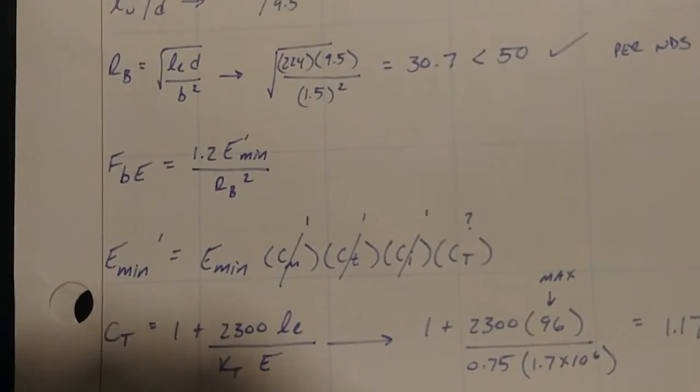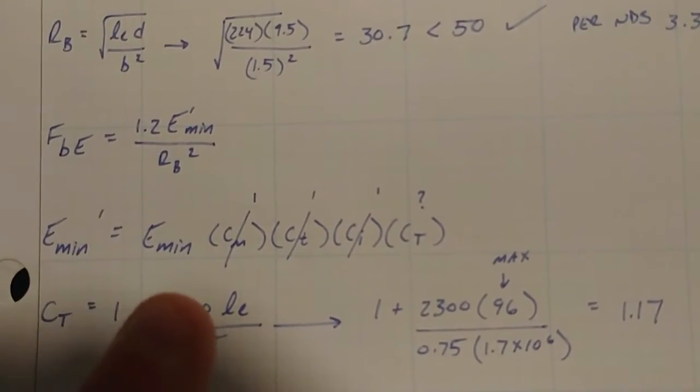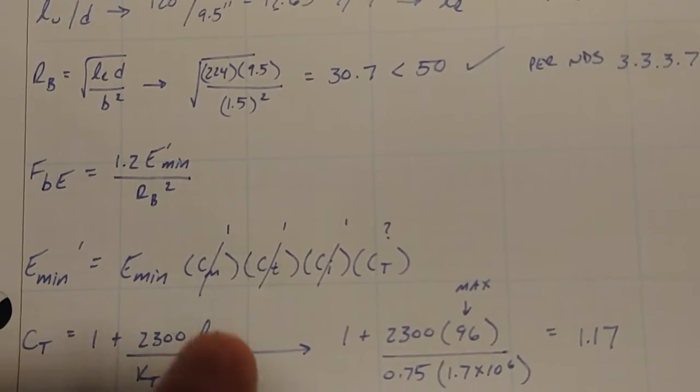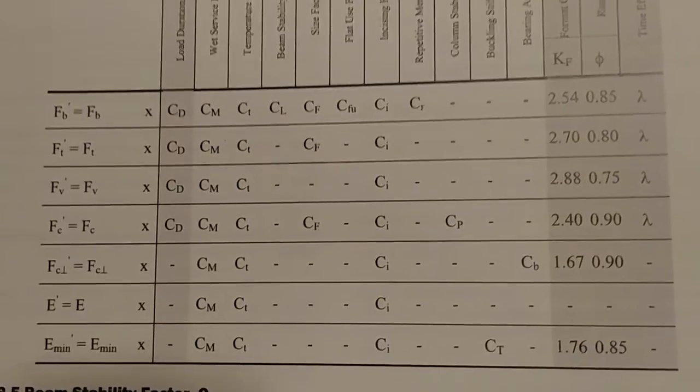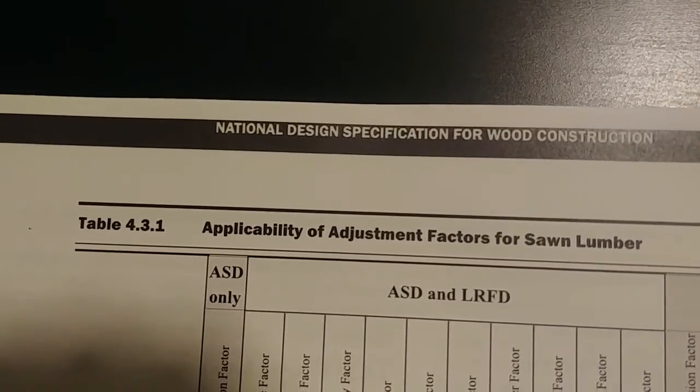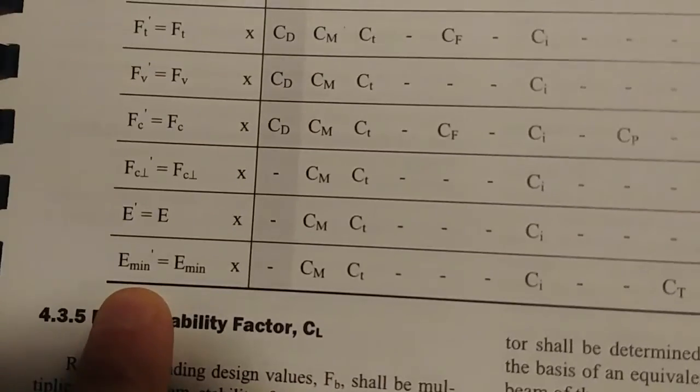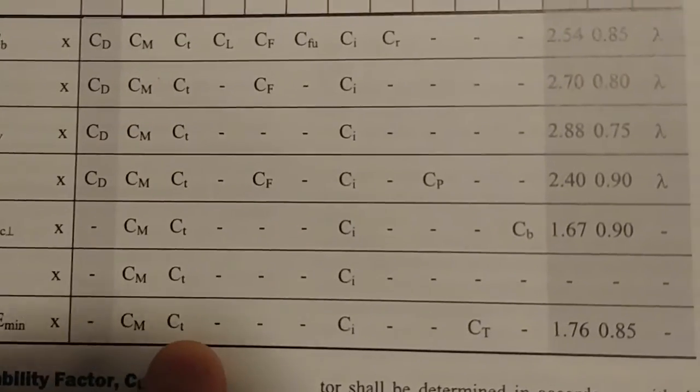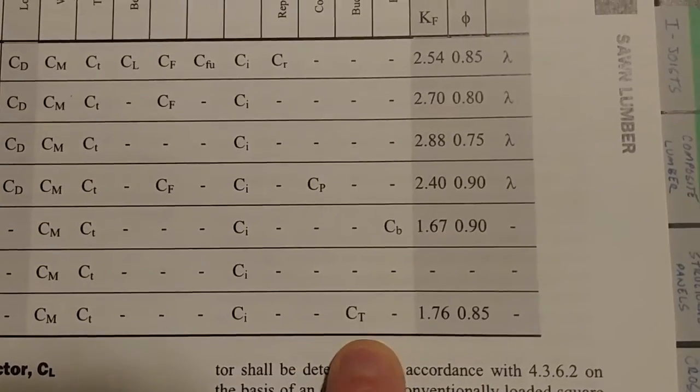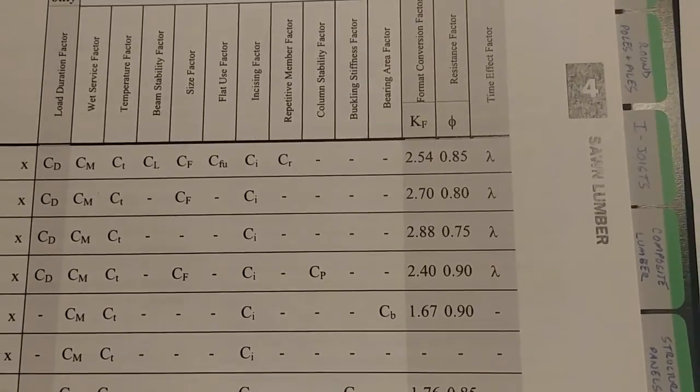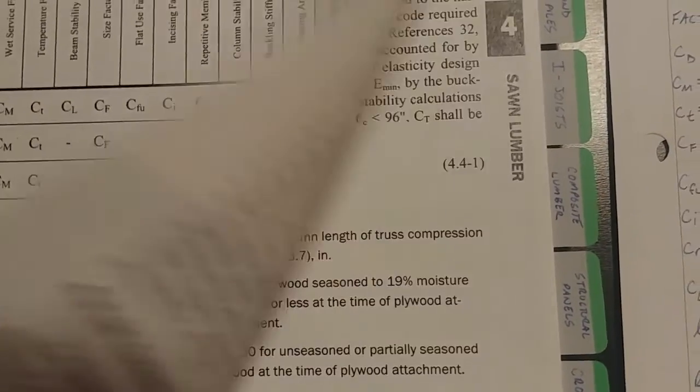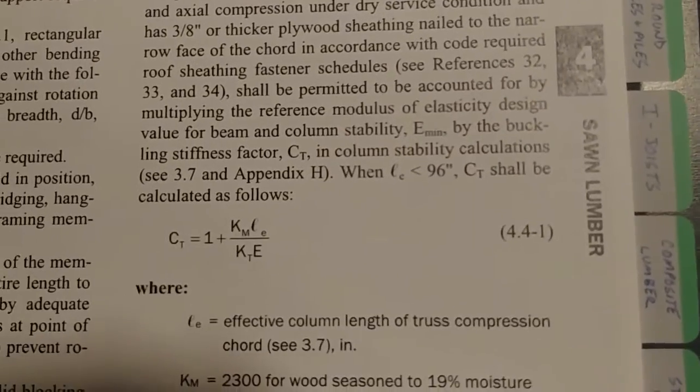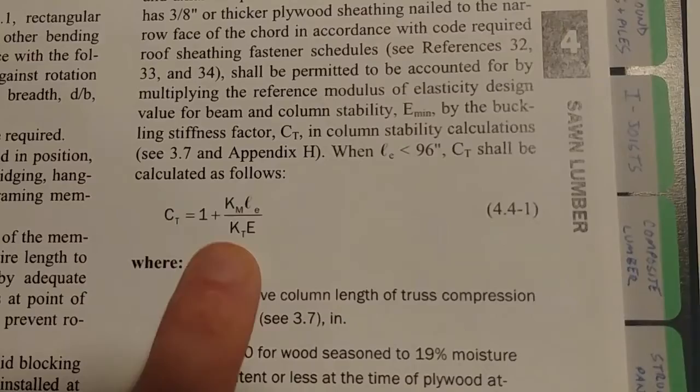So if we come back here, now that you guys believe me, E min prime is E min times CM, because you have your factors here. So now E min prime actually has a different set of factors, which is, again, back of this table, 4.3.1. So your E min prime is just your moisture coefficient, your temperature coefficient, your incising coefficient, and now this new coefficient, your buckling stiffness factor coefficient, CT. Alright. So we need to go get that now. CT is defined on the next page is this. We have more factors to go find.